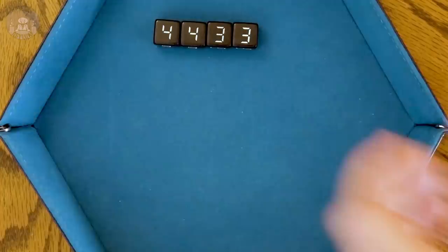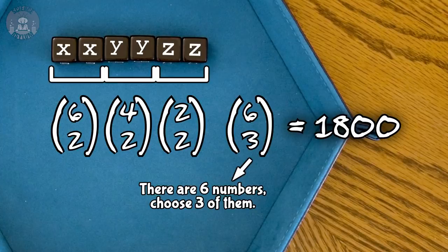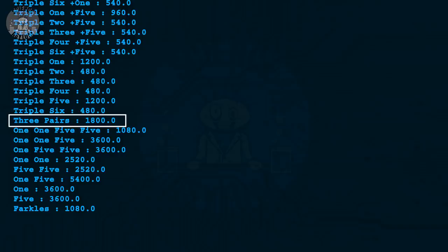Okay, how about three pairs? You'll need three dice combos and one number combo. That gives us 1800, which matches what we got before. Whew. Okay. I think we've seen enough of those. Back to the spreadsheet.